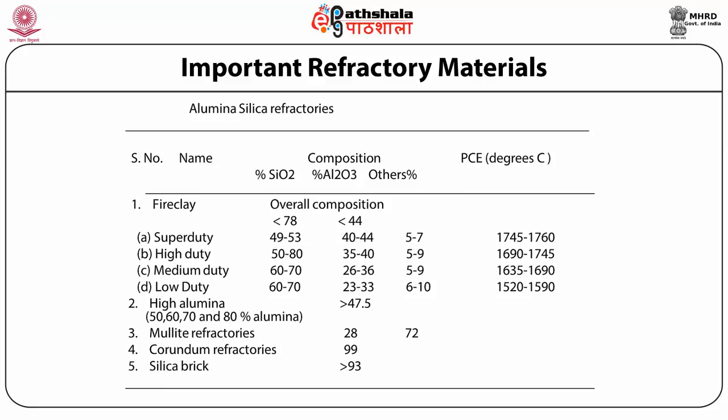There are different types of refractories which include fire clay, high alumina, mullite refractories, corundum refractories and silica brick. Their compositions are also mentioned on the right-hand side of the table.